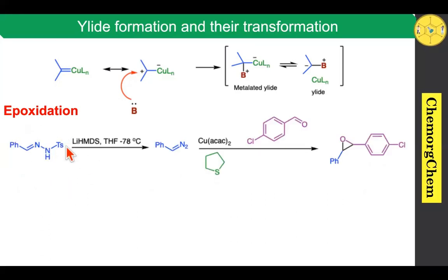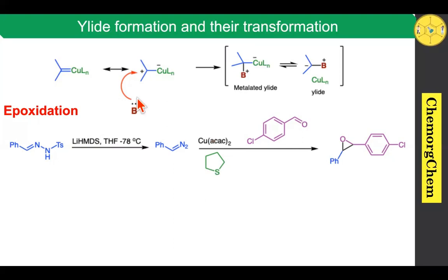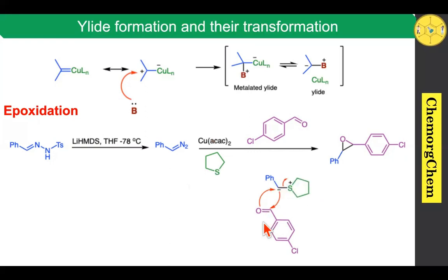Just like cyclopropanation, epoxidation is also possible in the same reactive manner. When you take a hydrazone derivative and react with base, it readily produces the diazo compound in situ. After formation of the diazo compound, it reacts with benzaldehyde in the presence of copper acetylacetonate and tetrahydrothiophene, which produces epoxide formation. Tetrahydrothiophene interacts with this center to produce the ylide intermediate, which then reacts with the aldehyde to produce the epoxide.